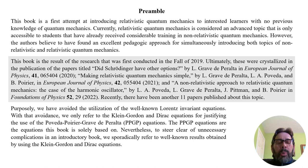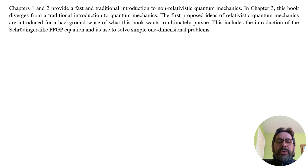Purposely, we have avoided the utilization of the well-known Lorentz-invariant equations. With that avoidance, we only refer to the Klein-Gordon and Dirac equations for justifying the use of the Poveda, Poirier, Grave de Peralta (PPGP) equations. The PPGP equations are the equations this book is solely based on. Nevertheless, to avoid unnecessary complication in an introductory book, we sporadically refer to well-known results obtained using the Klein-Gordon and Dirac equations.